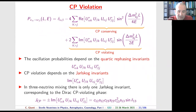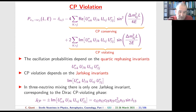CP violation depends on the imaginary part of the rephasing-invariant product. In three-neutrino mixing, all these imaginary parts are equal up to a sign, so CP violation can be quantified in a parametrization-independent way by the Jarlskog invariant. In the standard parametrization, the Jarlskog invariant is expressed as a product involving sin θ₁₂, sin θ₂₃, sin θ₁₃, cos²θ₁₃, and sin δ₁₃.